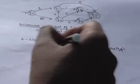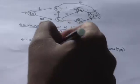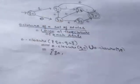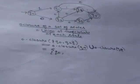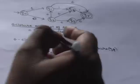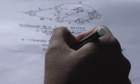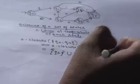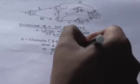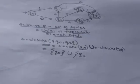First, find the empty closure of Q0. Include Q0 itself, then check its empty transitions — there are no empty transitions for state Q0, so the empty closure of Q0 contains only {Q0}.